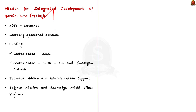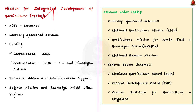Since MIDH is a centrally sponsored scheme, 60% of the cost is incurred by the Union government and the remaining 40% by respective state governments. In case of Northeastern and Himalayan states, the funding pattern is 90:10. MIDH provides technical advice and administrative support to state governments and state horticulture missions for saffron mission and other horticulture-related activities like Rashtriya Krishi Vikas Yojana. MIDH integrates and subsumes six ongoing schemes, including three centrally sponsored schemes and three central sector schemes.